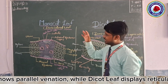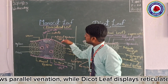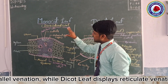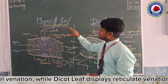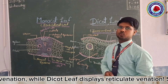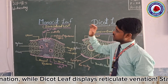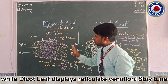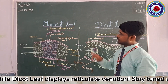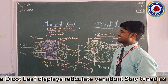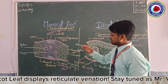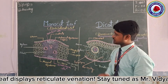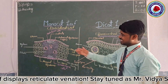In the monocot leaf, the term isobilateral is used. This isobilateral term means that only one type of mesophyll cell is present in this anatomy — only a single type of cell is seen here.